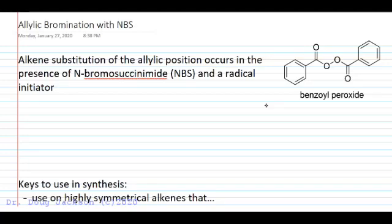Let's talk about alkene allylic bromination with NBS, N-bromosuccinimide, in the presence of a radical initiator. A good reaction for this is to brominate the allylic position next door to a double bond.